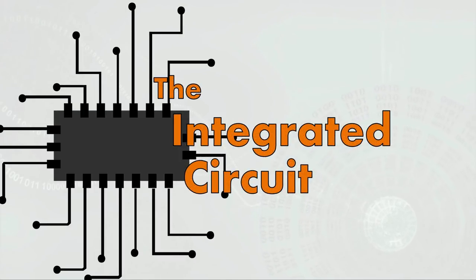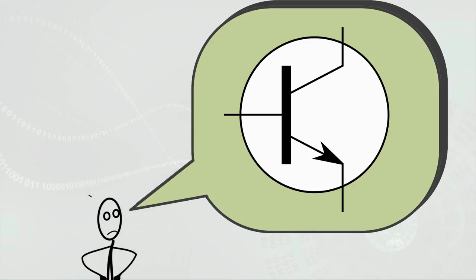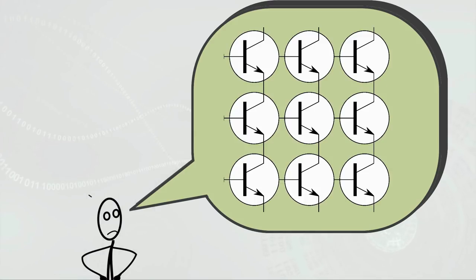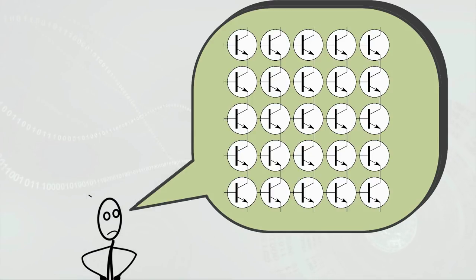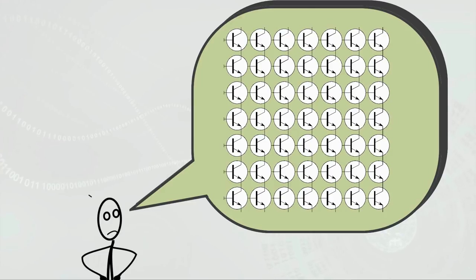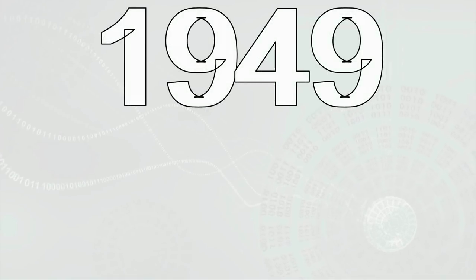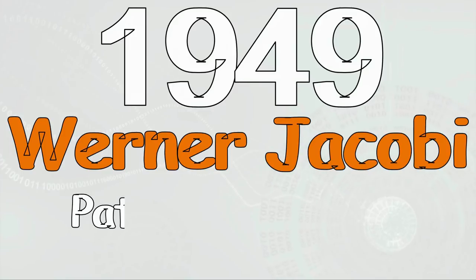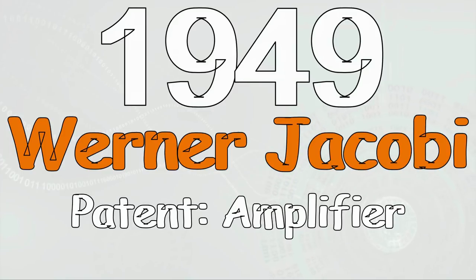With the newly invented transistor, it did not take long for engineers to envision something on a much grander scale. In 1949, a German engineer filed a patent for an amplifying device consisting of five transistors integrated into a piece of semiconductor. Shortly after, the idea of the integrated circuit was conceived.